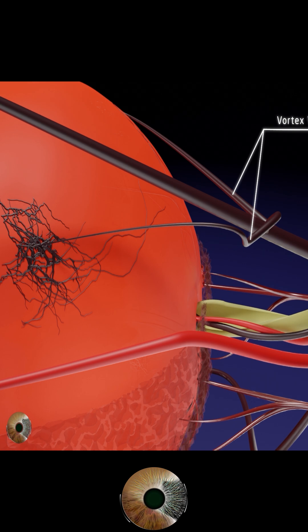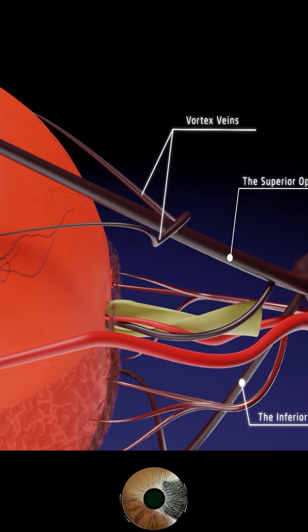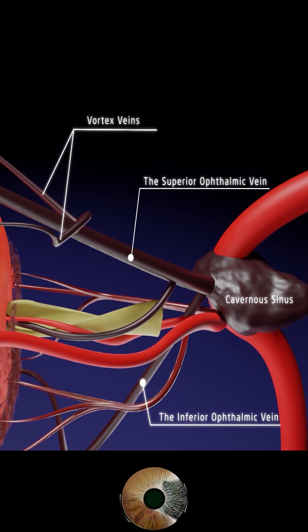The superior vortex veins drain into the superior ophthalmic vein. The inferior vortex veins drain into the inferior ophthalmic vein.